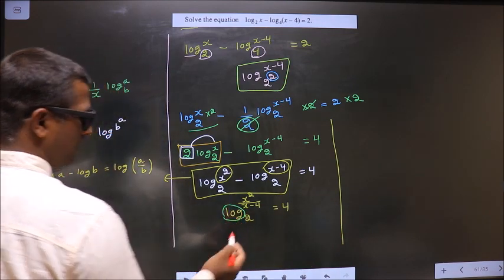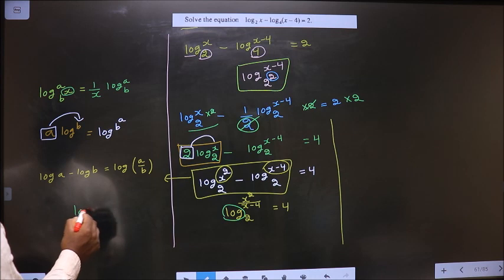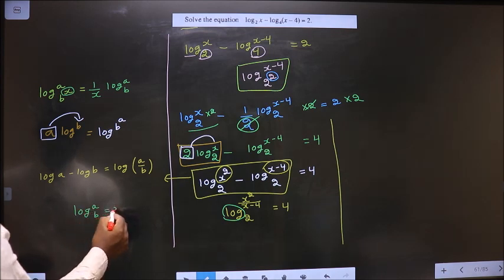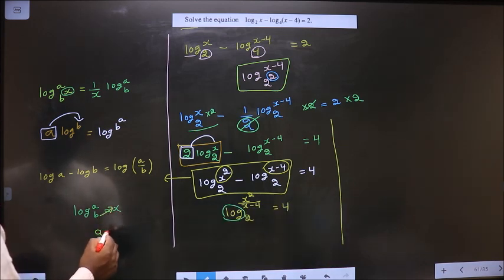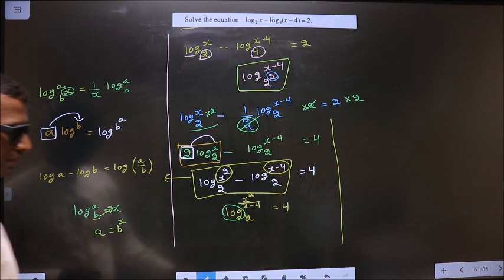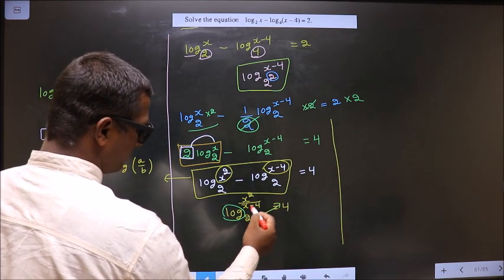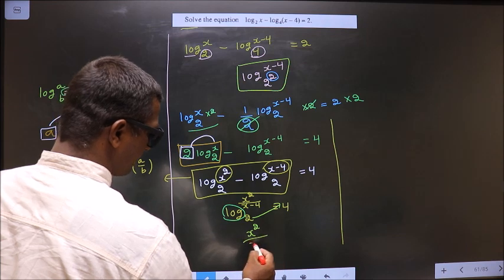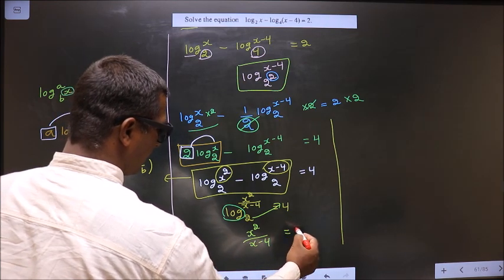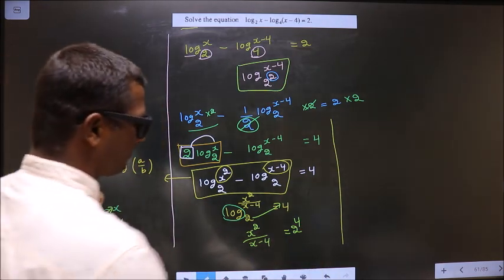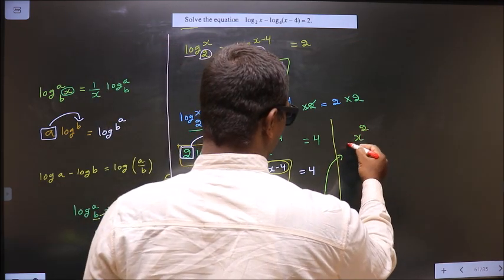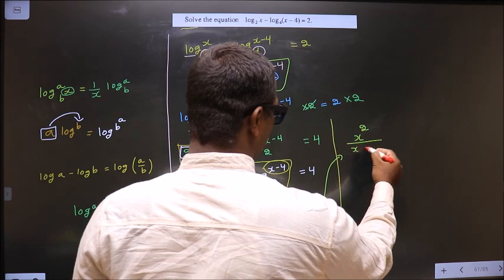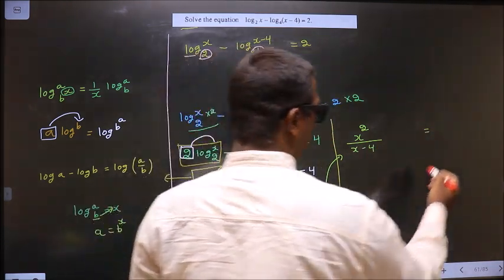Now we should remove the log. If log a base b equals x, then a stays on the same side, b becomes the base, and x becomes the power. So here, x-squared over (x minus 4) stays on the same side, 2 is the base, and 4 is the power, giving x-squared over (x minus 4) equal to 2-to-the-power-4, which is 16.